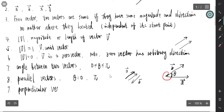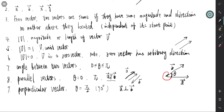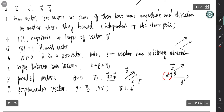There are also perpendicular vectors. If two vectors have the angle theta equal to π over two — that is 90 degrees — we call these two vectors perpendicular, written as a perpendicular to b. For parallel vectors, we write a parallel to b. That's perpendicular and parallel. These are the basic concepts of vectors. Next, we should talk about the operations of vectors.